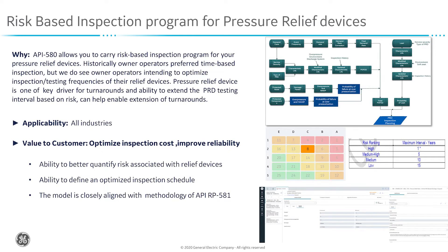Application: any industries where you are having pressure relief devices, and that's one of the main components in any asset-intensive industry. From a value perspective, this helps you optimize your inspection cost, but it also helps you improve the overall reliability of your plant. Some of the key functions or values are that this module helps you to better quantify risk associated with relief devices, provides you with an optimized inspection schedule, and the methodology is closely aligned with that of API RP 581.